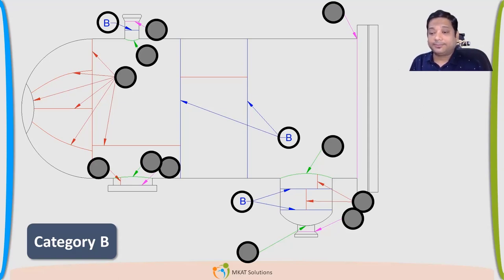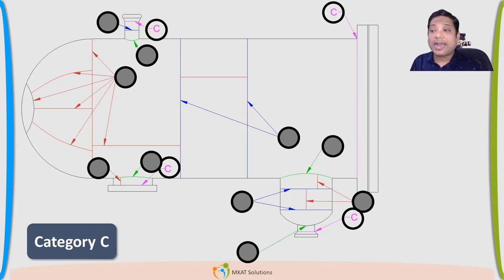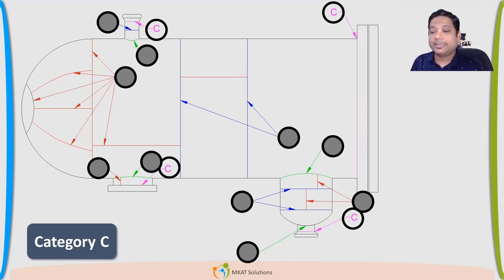Category C: any flat head or flange connected with the shell — that joint is given Category C. Any nozzle-to-flange joint is also Category C. Any flat head or curved flange which is directly connected to the shell will also be Category C.